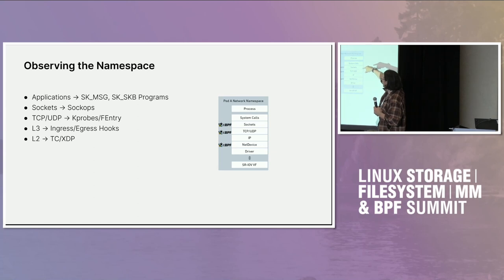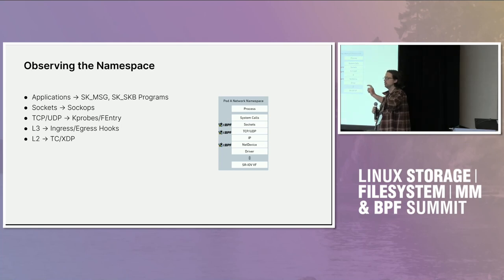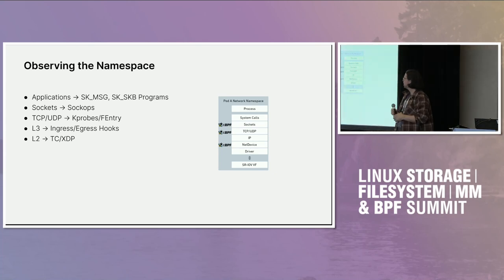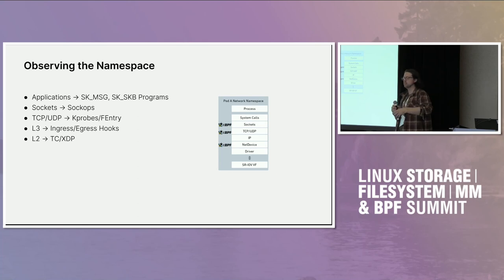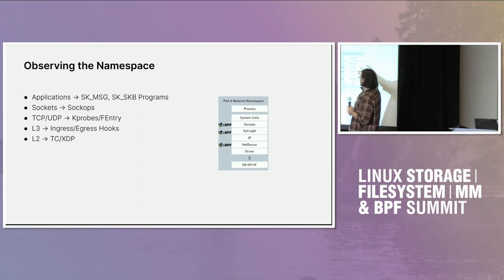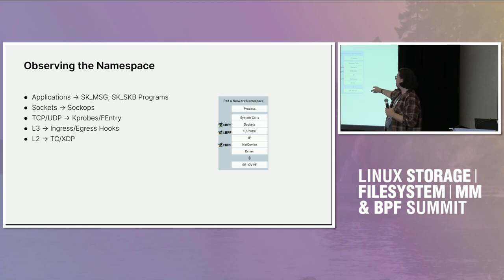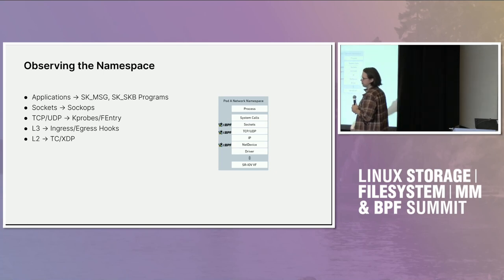In general, that's not really a problem for most things. For application data, we have SK message, SKB programs that run on the socket, and some kprobes on send message and similar. BPF programs at the application level are not network-namespaced, so they'll run even if the application is inside a pod. Same with sockets and sock ops — we can get TCP state across namespaces. Same for UDP, kprobes, fentry, and L3 ingress/egress hooks.